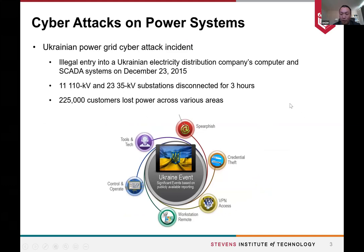Cyber security in smart grid and power systems is not just in our research — it is actually happening in real systems. For example, in December 2015 there was a major cyber attack incident in the Ukrainian power grid. In that incident the attackers gained illegal entry into the distribution company's SCADA system, explored for some time, figured out how to utilize the HMI to disconnect circuit breakers, and finally more than 30 substations were disconnected for over three hours in very cold winter.